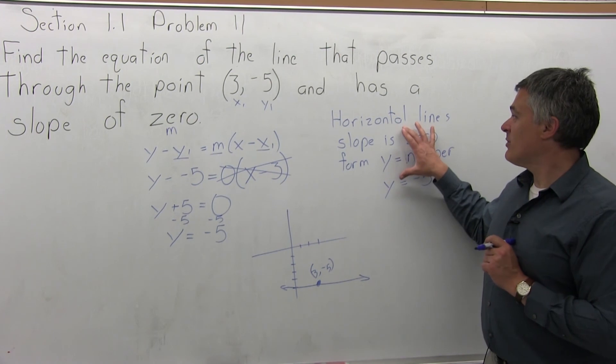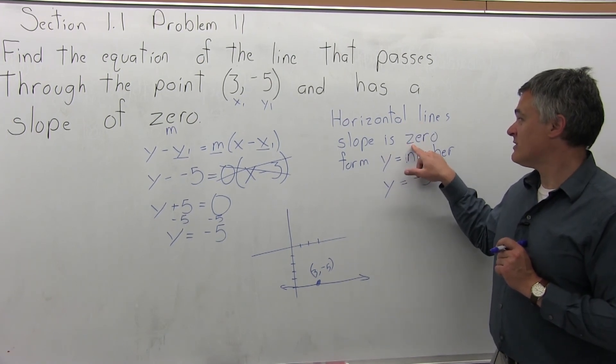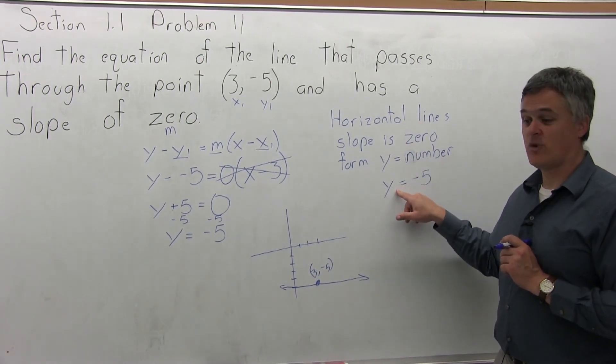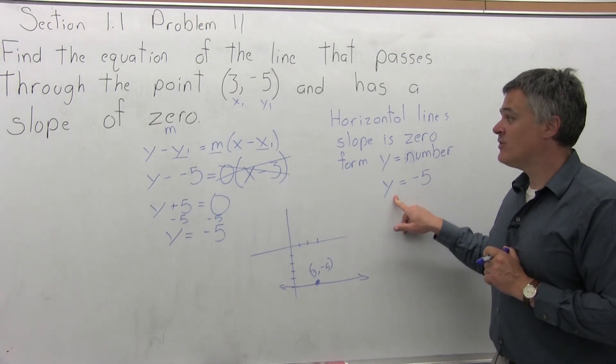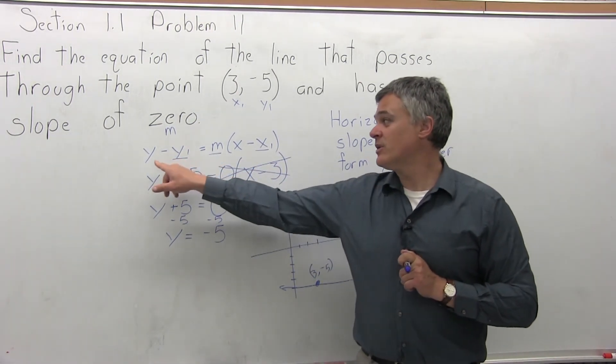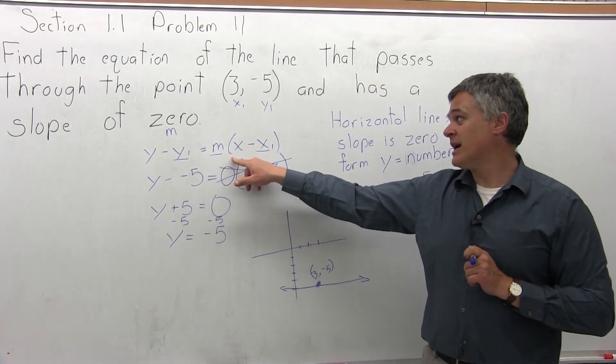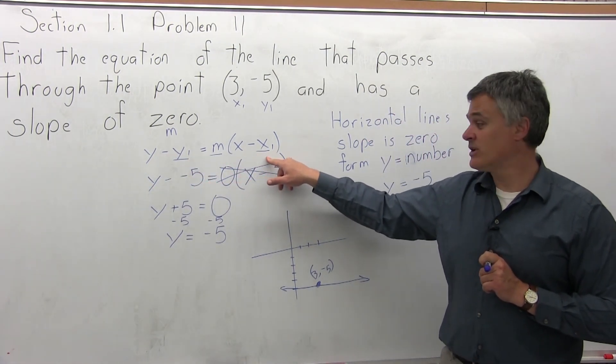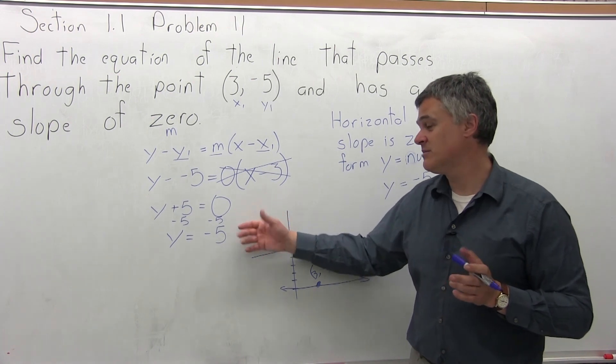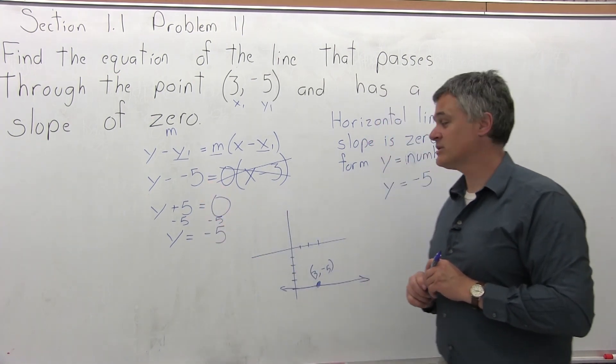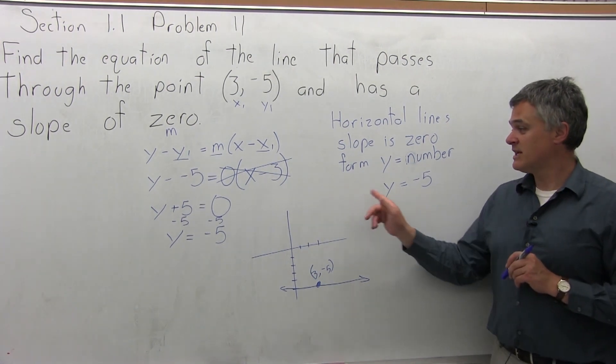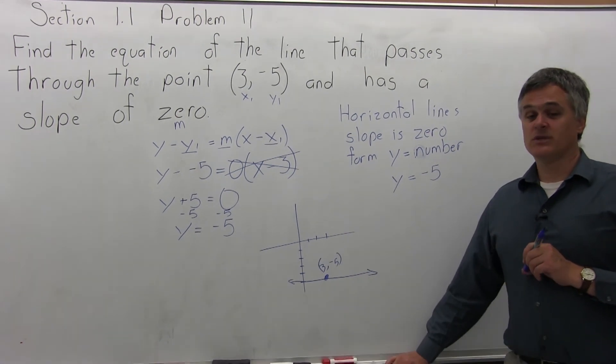If you remember that all horizontal lines have a slope of 0, and they have the form y equals a number, you'll get the answer a little quicker. If you don't remember that, you start with the equation, y minus y1 equals m times x minus x1, and you'll get the same answer, and you'll waste maybe a minute of work, maybe 3 lines of work. So, not that bad. But either way, same answer. The answer is y equals negative 5.